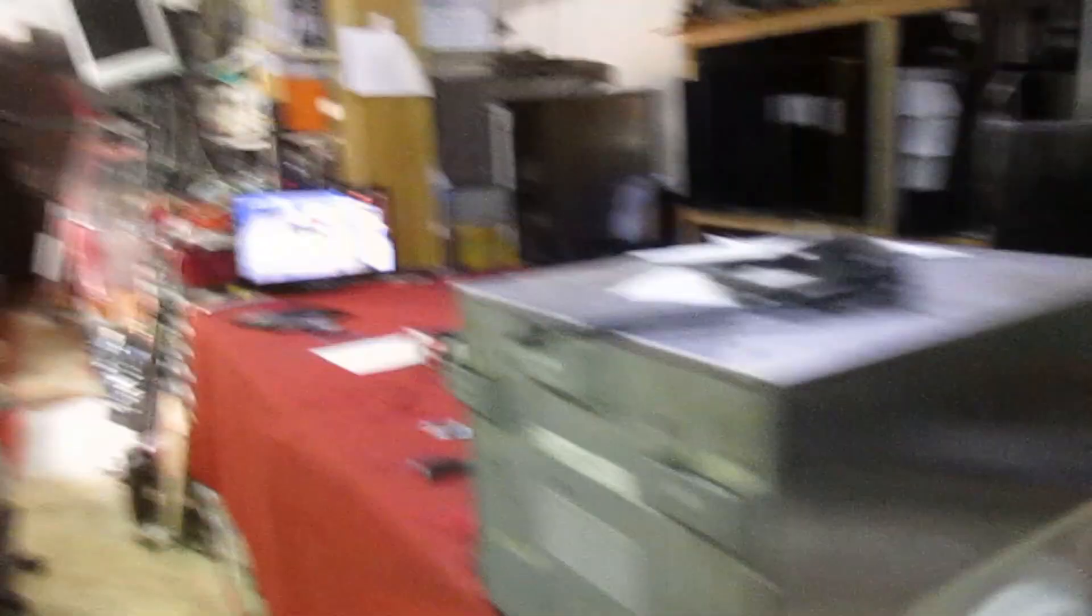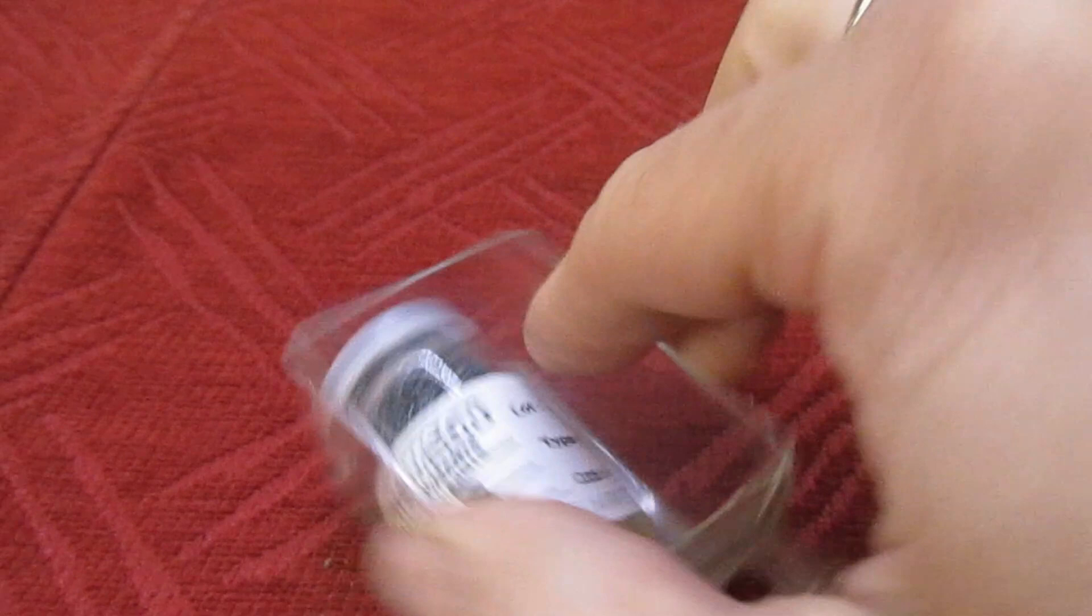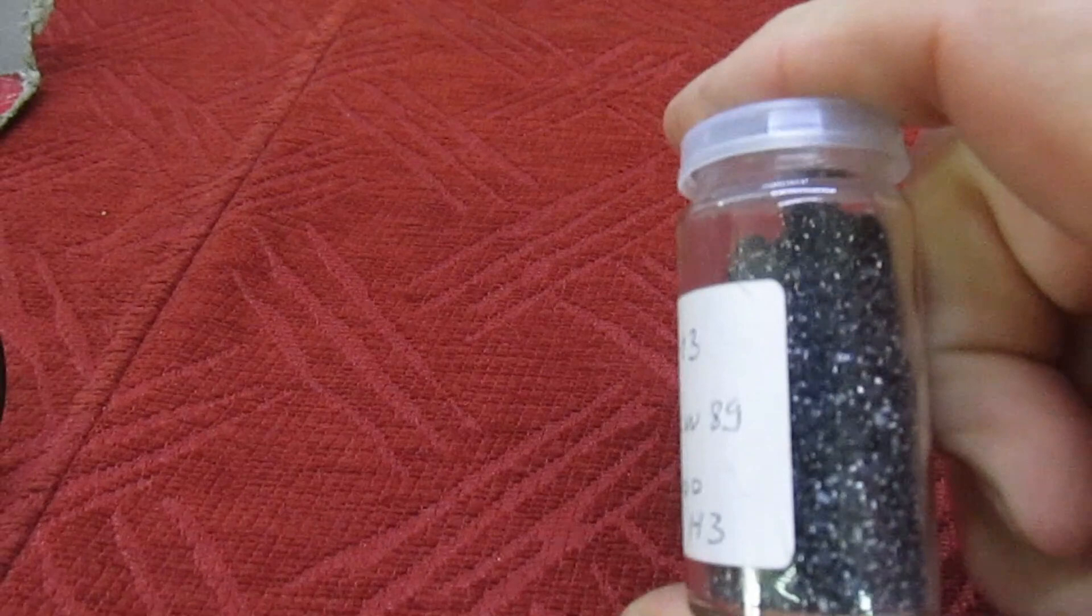Surface mount transistor. Right, so that is a BCW 89. Now if you're wondering how small these actually are, this jar which as you can see I've got just between my fingers actually contains 3000 transistors.